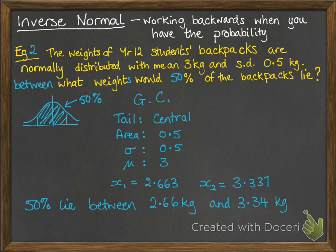You could also be given a question talking about less than a certain value. You do exactly the same thing, but your tail would be on the left-hand side — you just switch it around. You pick the tail that you need for whereabouts on the graph your shaded section is.